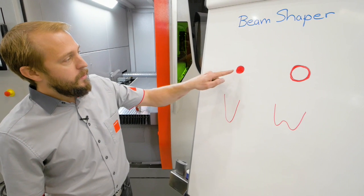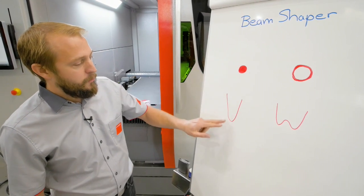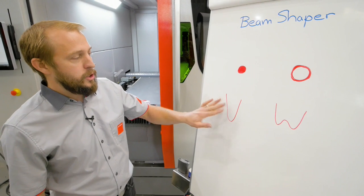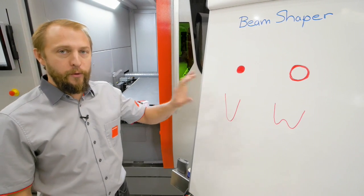Without beam shape, the entire energy will be on one spot. As you can see from the side, all the energy is here. That's perfect for fusion cutting.